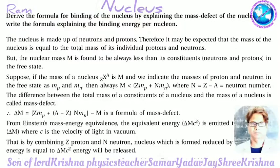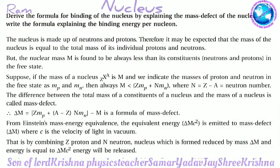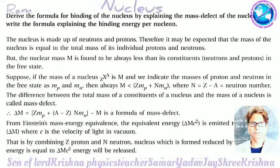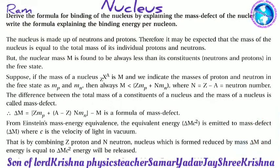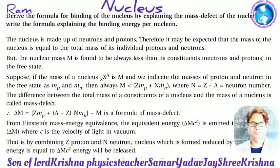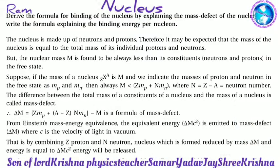But the nuclear mass M is found to be always less than the total mass of its constituent neutrons and protons in the free state. If the mass of nucleus ZXA is M, and the masses of the proton and neutron in the free state are mp and mn, then M < Z·mp + N·mn, where N = A − Z is the neutron number.